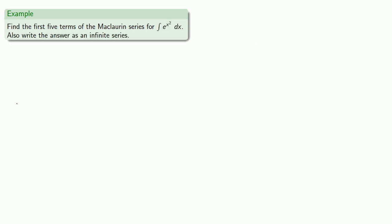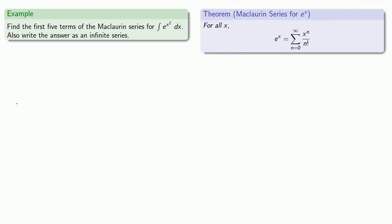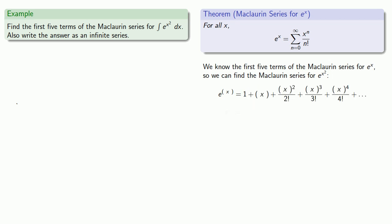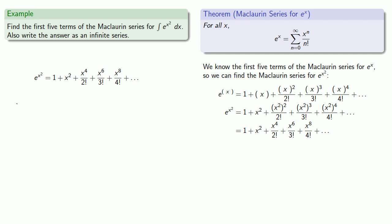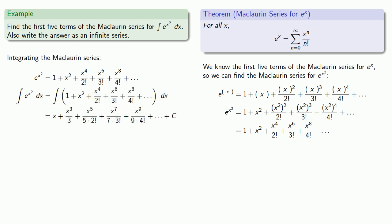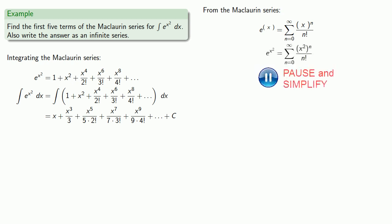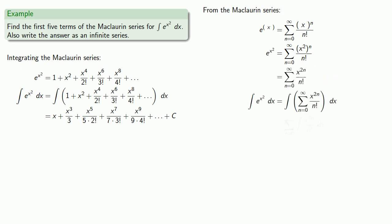Now let's find the indefinite integral of e to the x squared. We'll pull in our Maclaurin series for e to the x. We know the first five terms of the Maclaurin series for e to the x, so instead of writing x we'll write x squared, giving us the first five terms of the Maclaurin series for e to the x squared. To find the integral, we'll integrate term-wise, which gives us the first five terms of our series. To write this as an infinite series, we start with our Maclaurin series, replace x with x squared, do a little algebraic simplification, then integrate term-wise to get our indefinite integral.